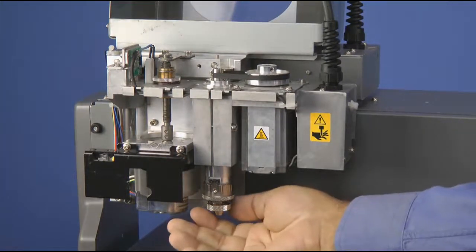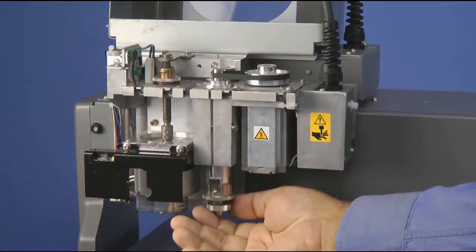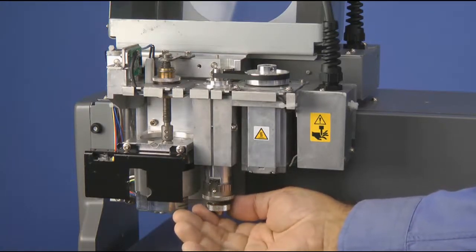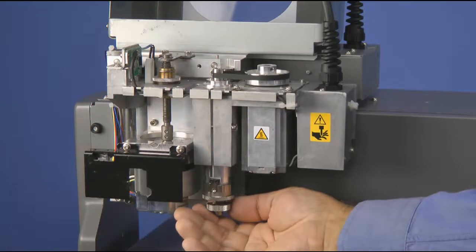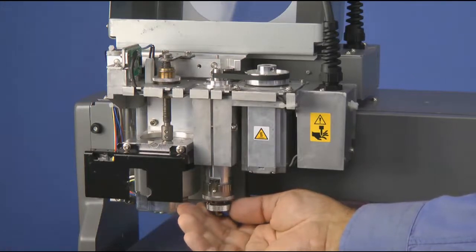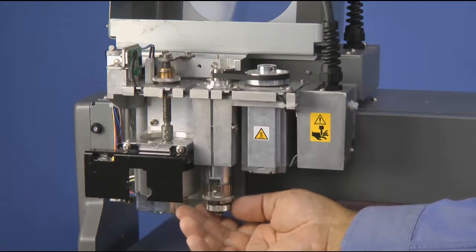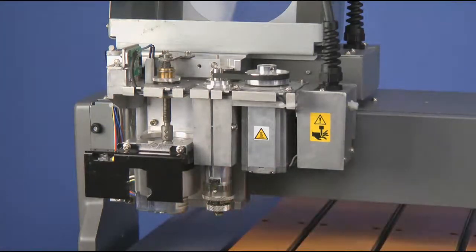Next, we will adjust the nose cone 7 to 8 more clicks counter clockwise. This allows us to set our depth to 0.041 to 0.042 inches. This is the depth that we want to drill our braille dots.